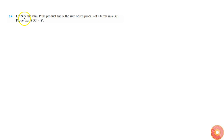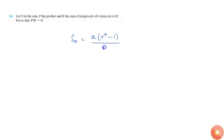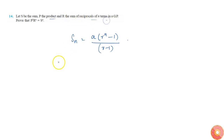Given that S is a sum of n terms in a GP, Sₙ is equal to a times r power n minus 1, divided by r minus 1. P is given as the product of n terms, and R is given as the sum of reciprocals.